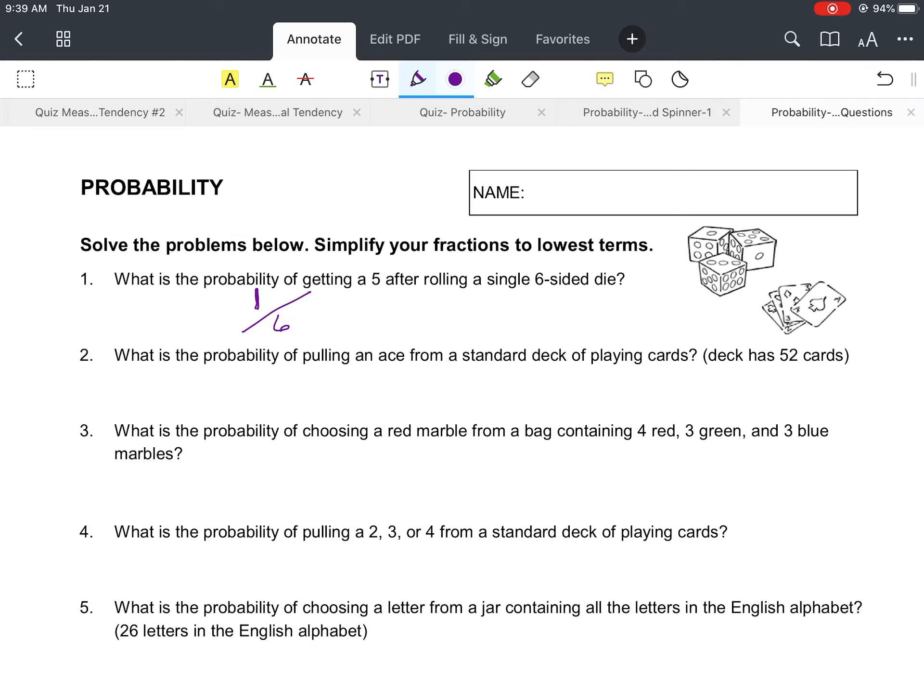Number two, it says what is the probability of pulling an ace from a standard deck of playing cards? So in case you haven't played with a deck of cards a whole lot, each deck of cards, it's standardized that there are 52 cards in a deck.